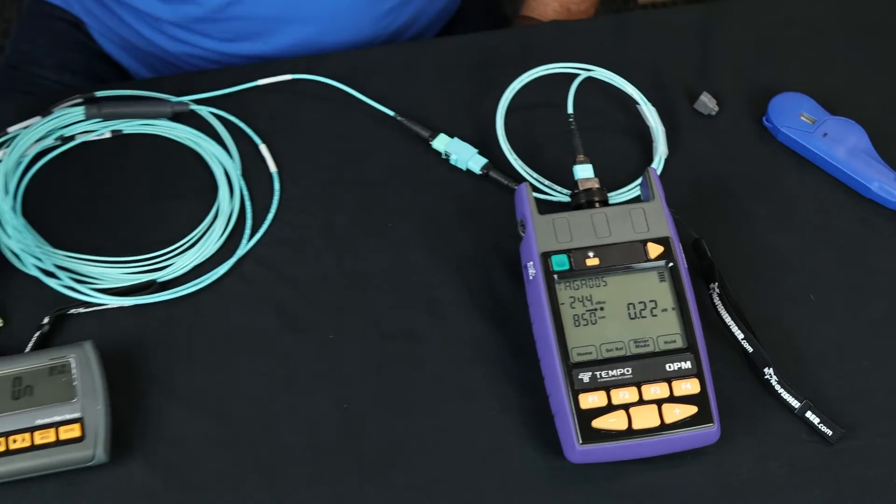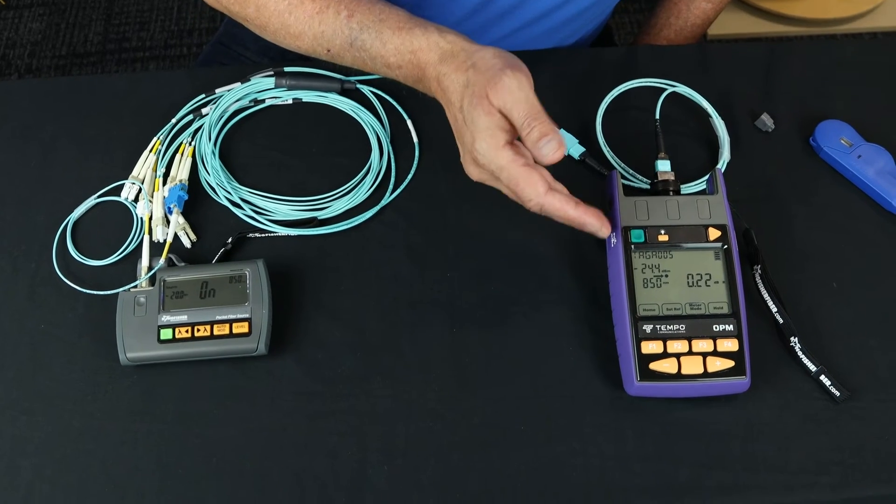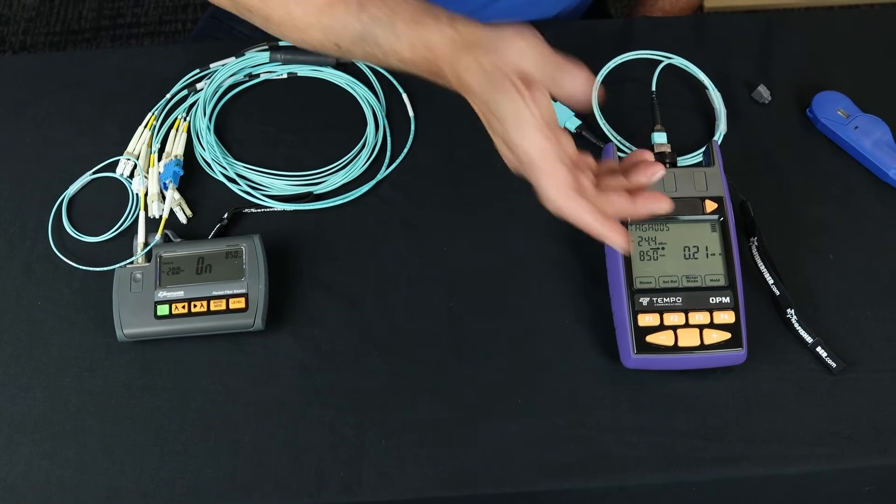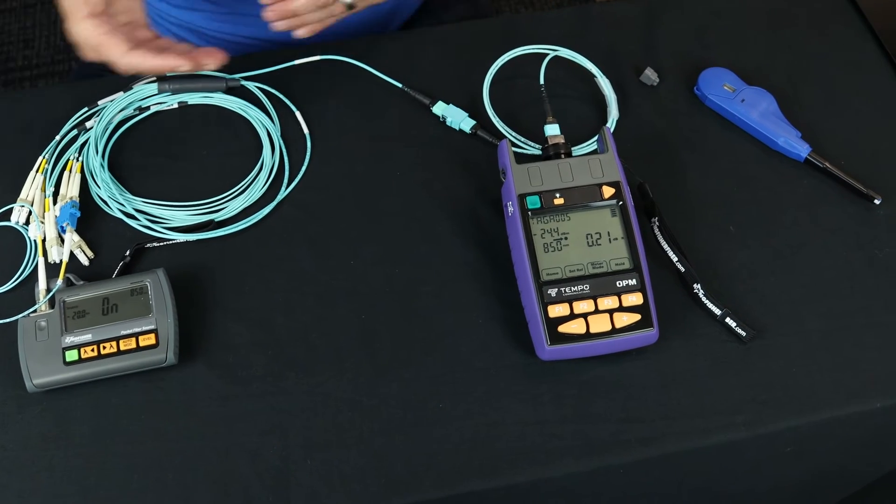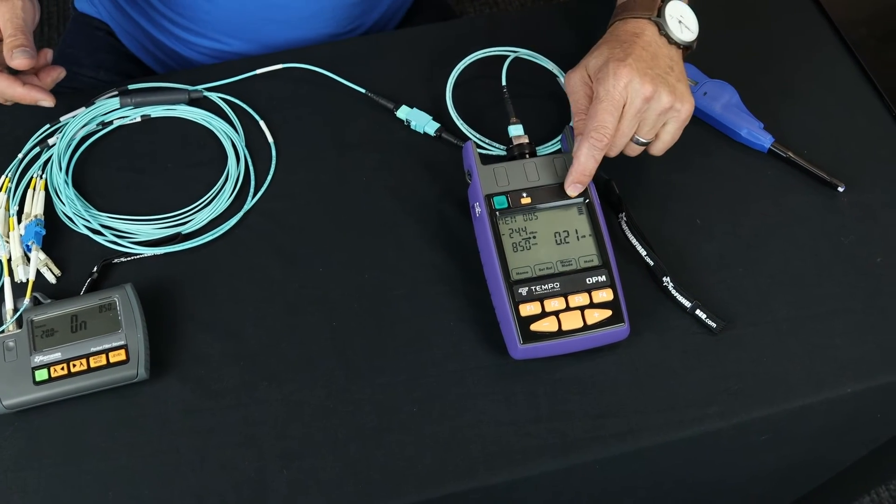So on channel one, I can see I've got 0.21 dB of loss. That's not bad. I can store that data.